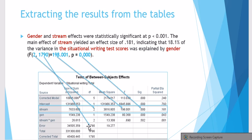Stream had a degrees of freedom of 2, with the second degrees of freedom of 1790, that's associated with error, with an F value of 198.001, as you can see here, and a very small p-value. This indicates that there is a significant difference across the levels, significant difference between levels in the situational writing test scores.